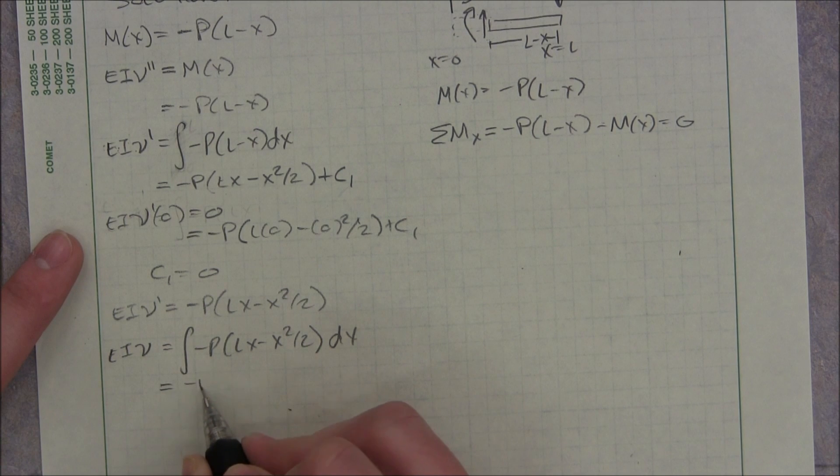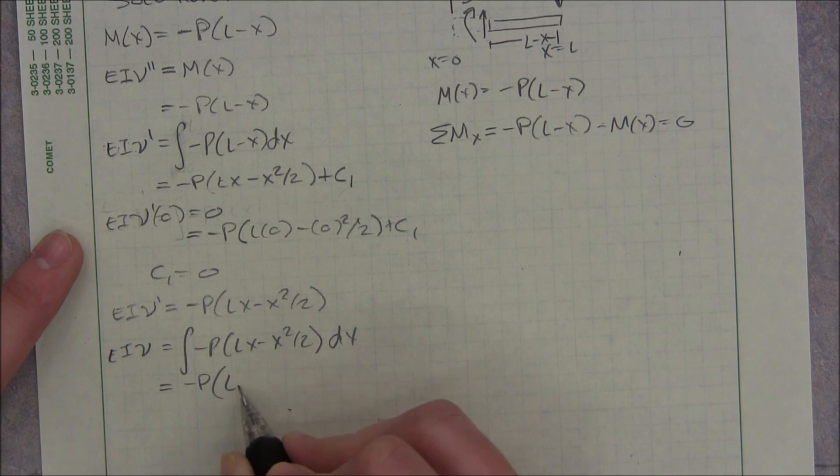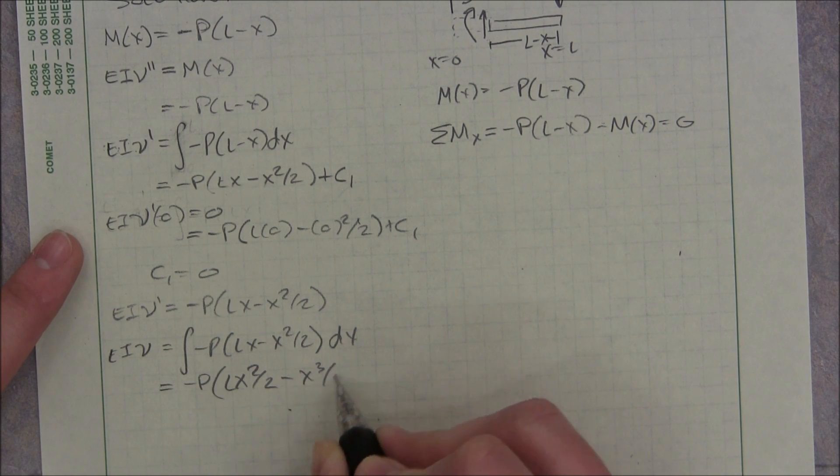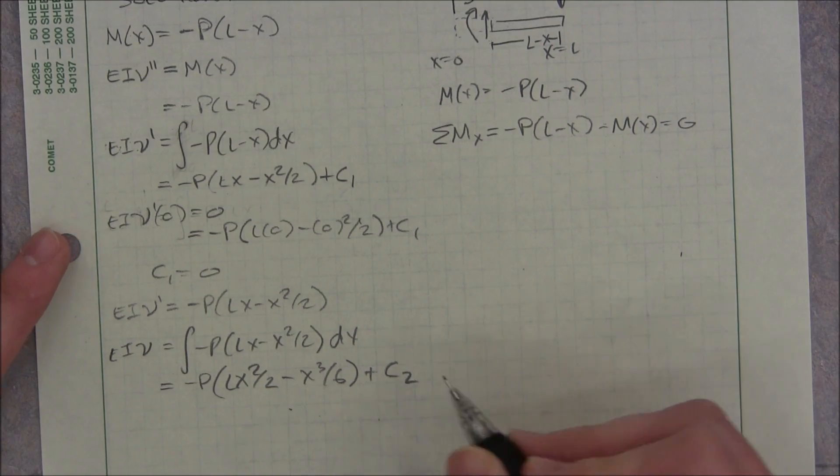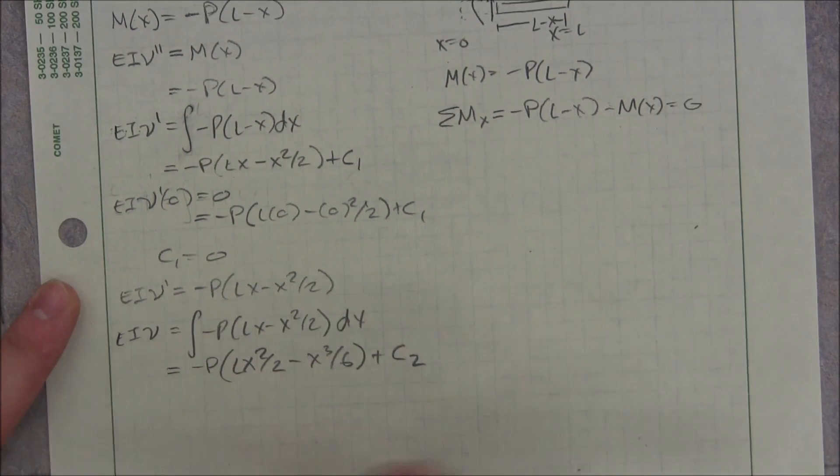Alright, that equals negative P L times x squared divided by 2 minus x to the third divided by 6 plus c2, another integration constant. Can't forget those.